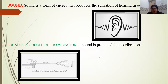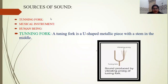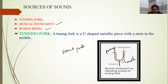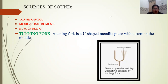The sources of sound include: the tuning fork, musical instruments, and human beings. A tuning fork is a U-shaped metallic piece with a stem, also called a handle, and two prongs. The prongs are set into vibration when either of them is struck gently on a rubber pad, and sound is produced.